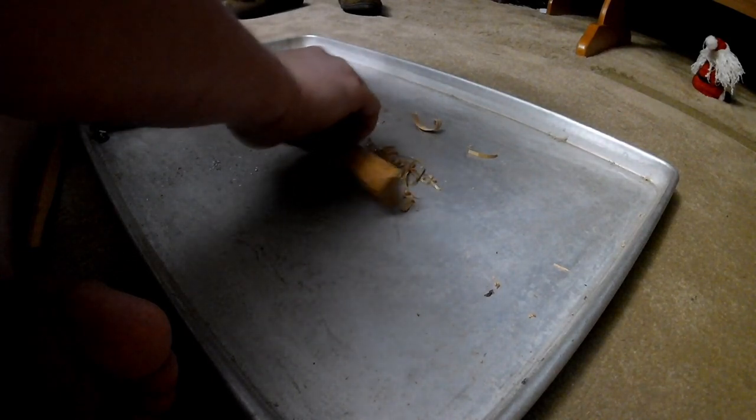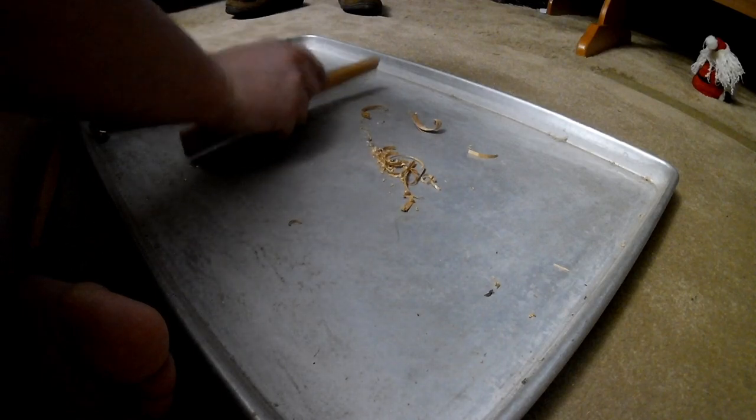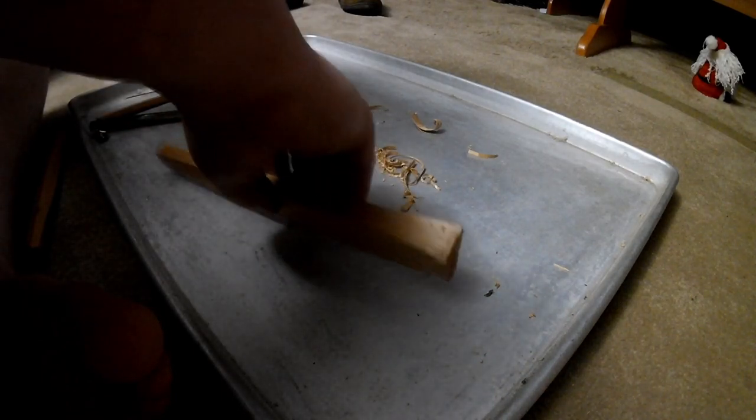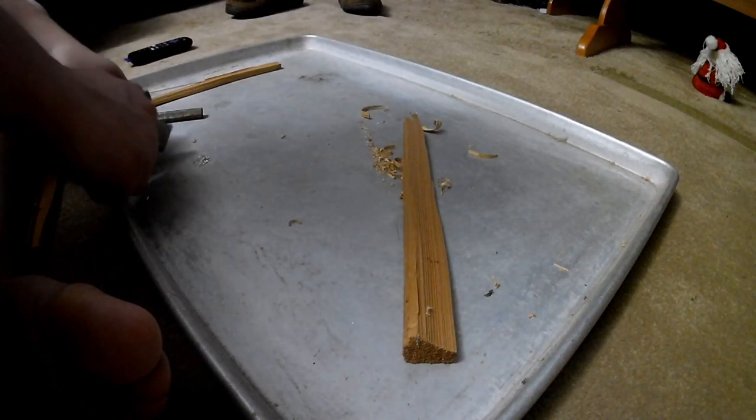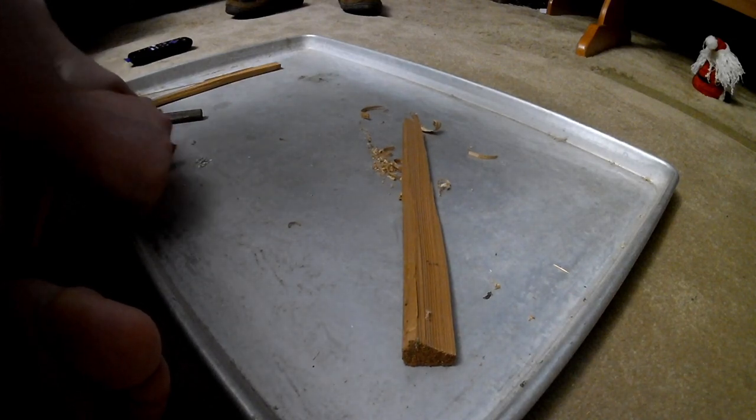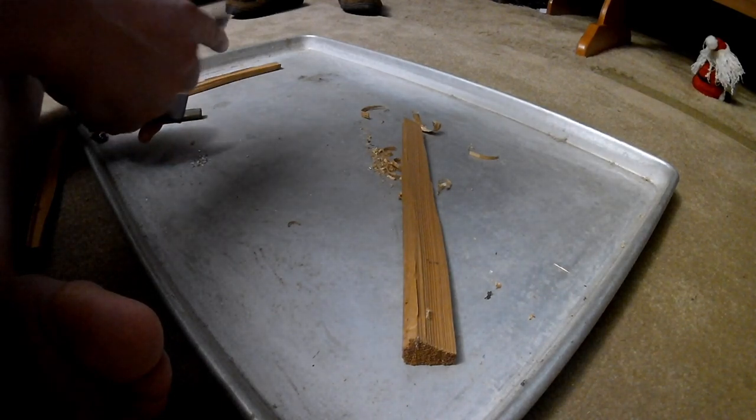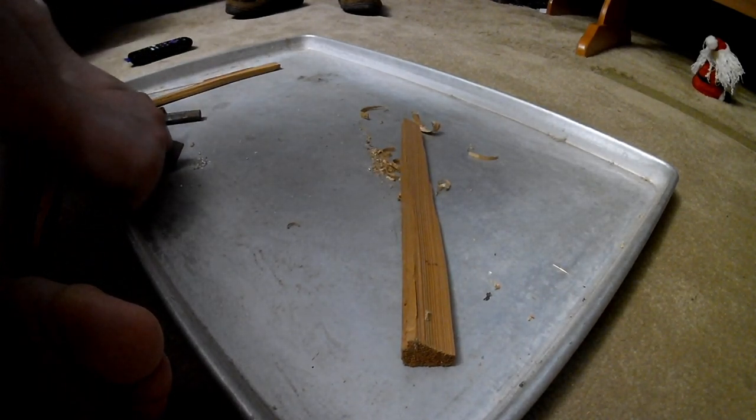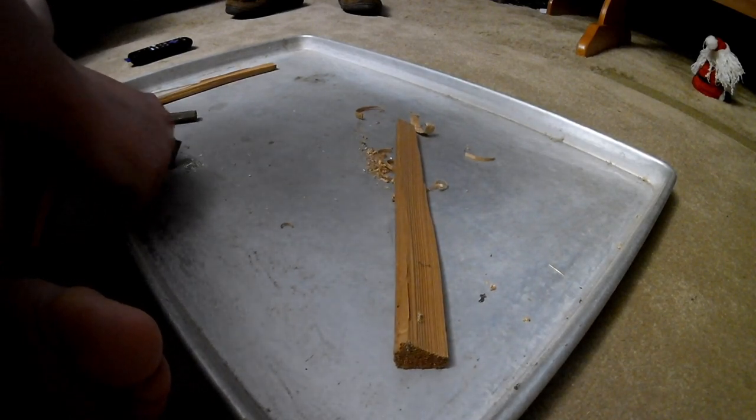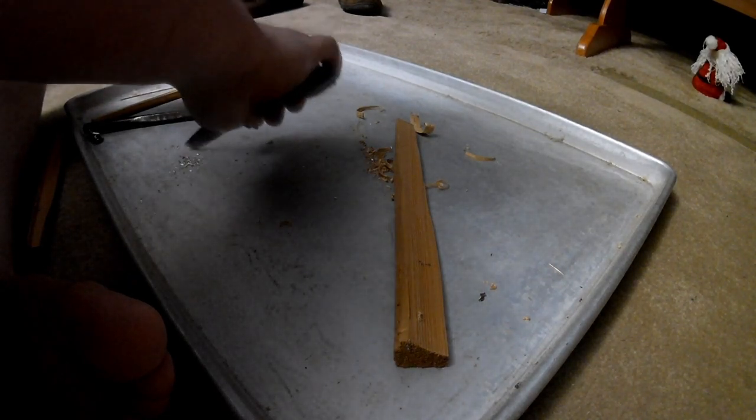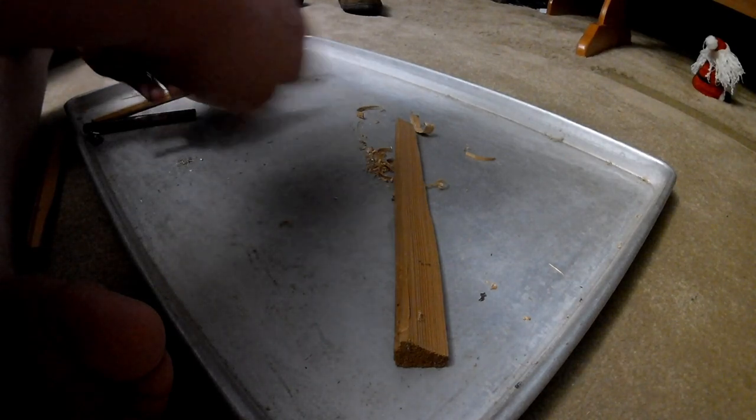I suppose when I do that—sorry for the noise there—maybe I'll show you how I do that. It's just the quick method. I'll get out the stones and put a really nice edge on a nice knife, but this knife I just clamp a belt sander in a bench vise upside down and give it a quick touch up. It's not the best edge, but it's good enough for this. Let's see, we got a little pile there.